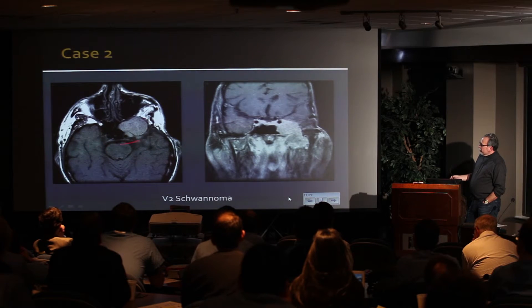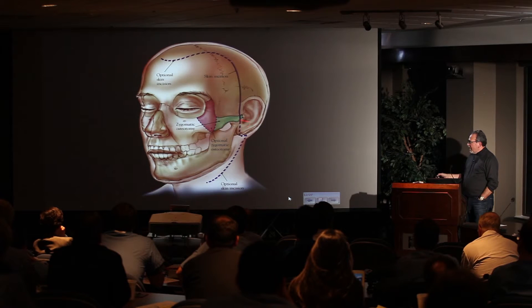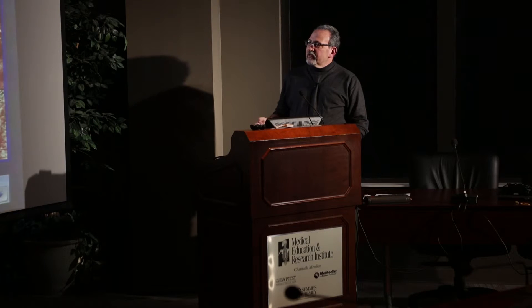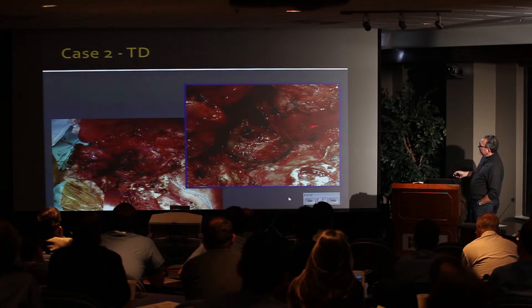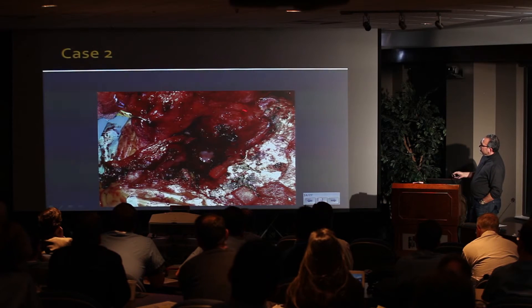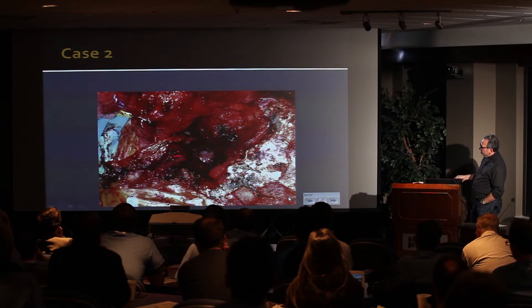This tumor is a little more anterior — a V2 schwannoma extending both intracranially and into the infratemporal fossa. In this situation we added an orbitozygomatic osteotomy. We did not do a formal craniotomy; we did a subtemporal craniectomy, going in one piece reflected inferiorly on the masseter. Here is the intraoperative view: the orbit, just a little bit of dura exposed, and the tumor in the infratemporal fossa. The temporalis muscle is rotated inferiorly with the orbitozygomatic osteotomy. Once the tumor is out, you see the orbit, the small bone removal, the temporal dura, and the sphenoid sinus.